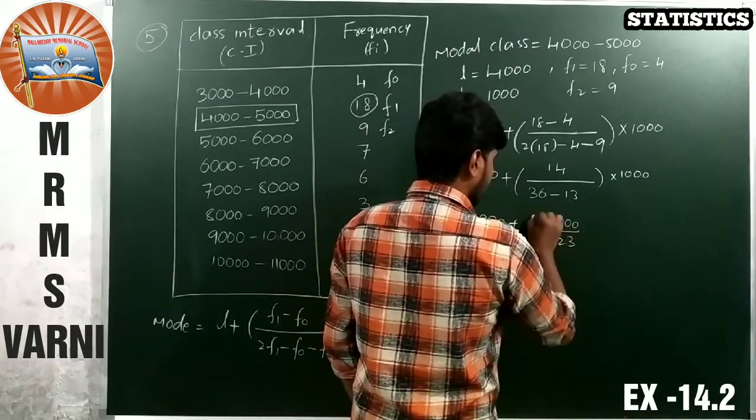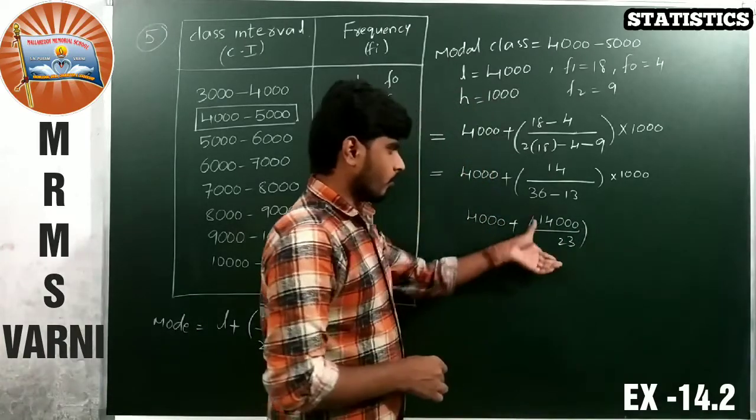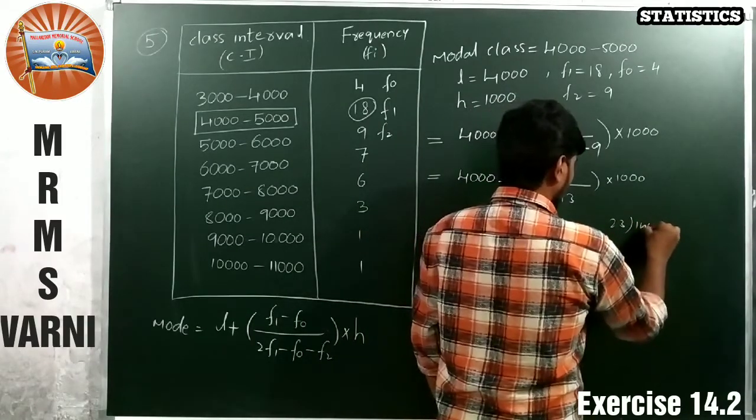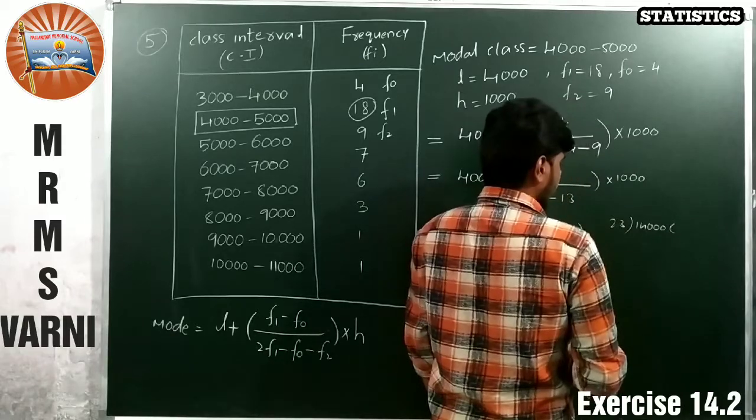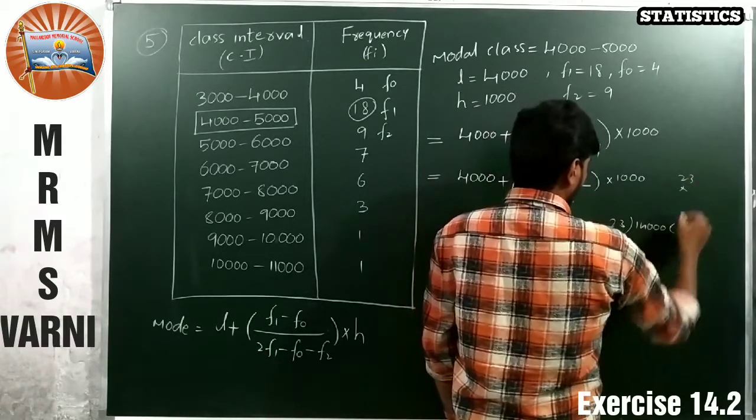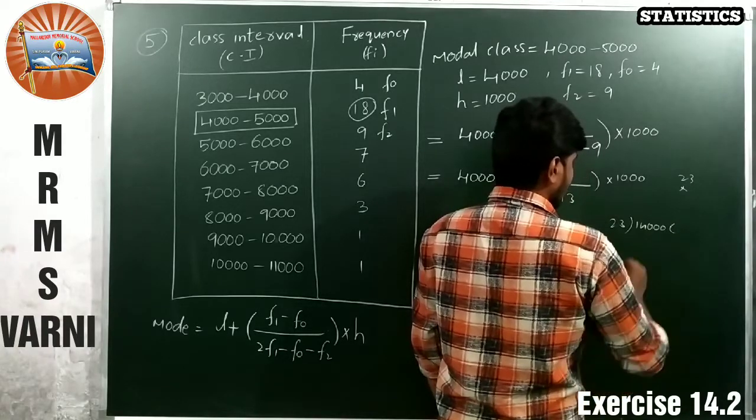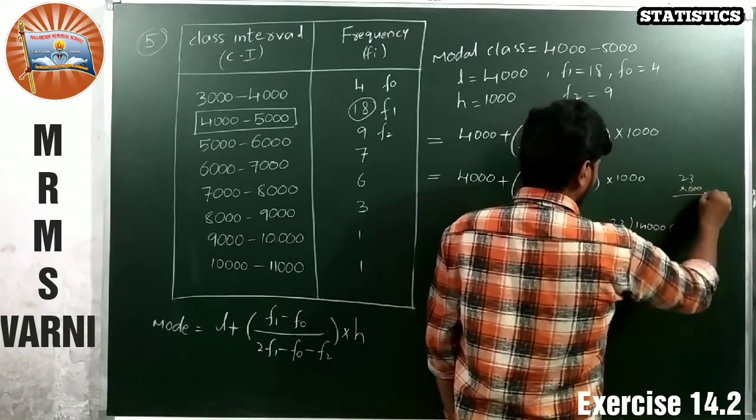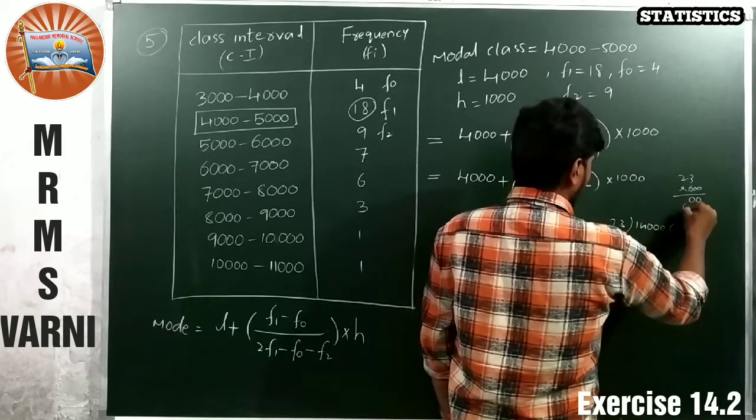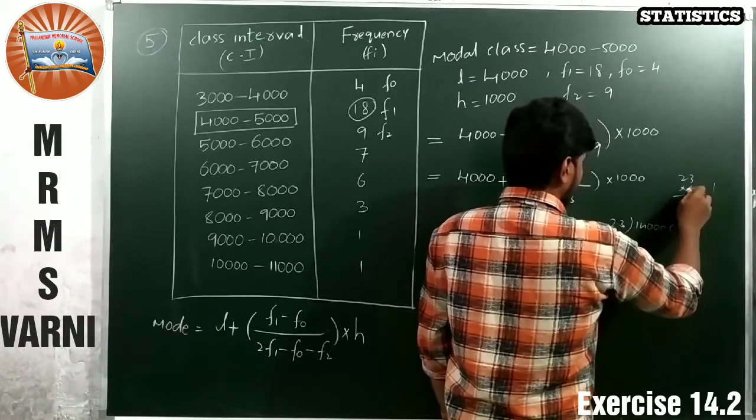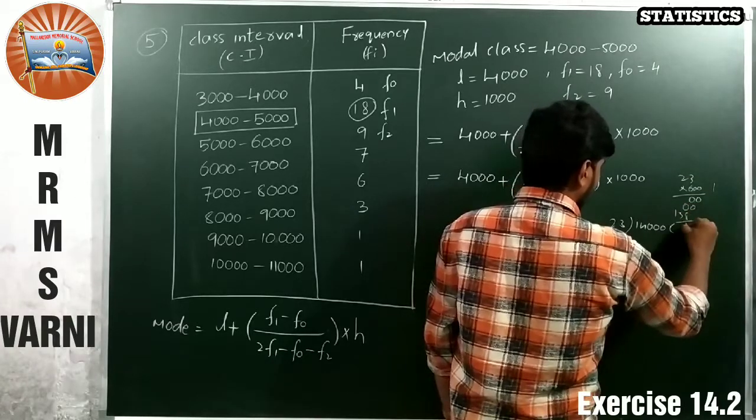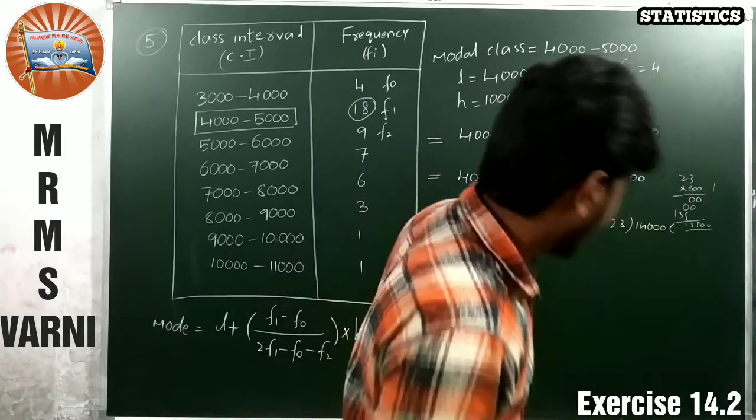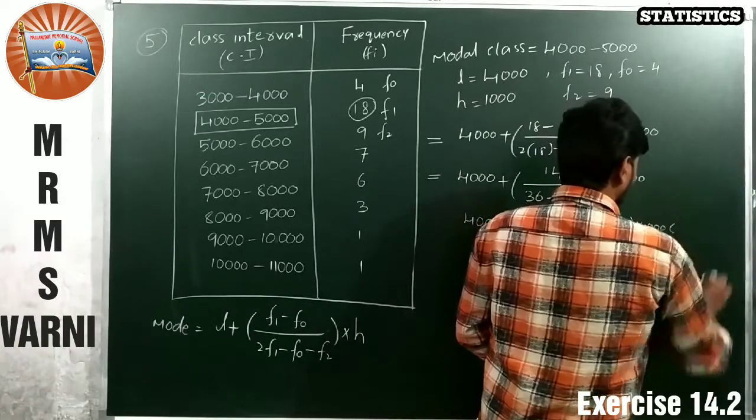So what becomes? 4000 plus 18 minus 4, it is 14. 18 into 2 is 36 minus 13 is 23 into 1000. So 4000 plus 14 into 1000 by 23. So 4000 plus 14000 by 23. Now what we have to do? Perform the division here. 23 into 14000.